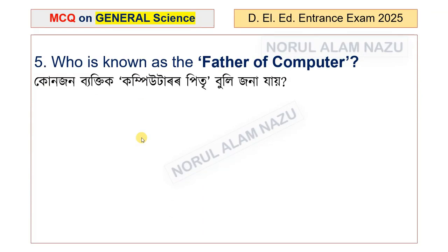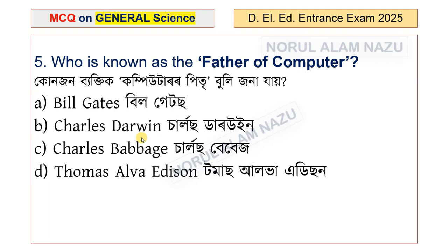Question number 5: Who is known as the father of the computer? The options are Bill Gates, Charles Darwin, Charles Babbage, and Thomas Alva Edison. Charles Babbage is known as the father of the computer.